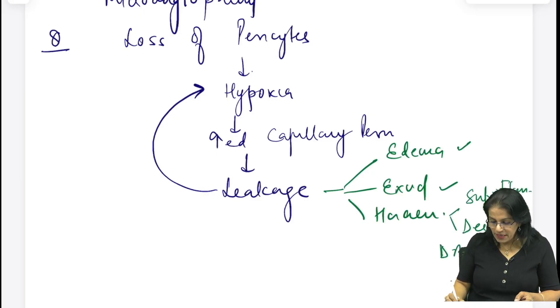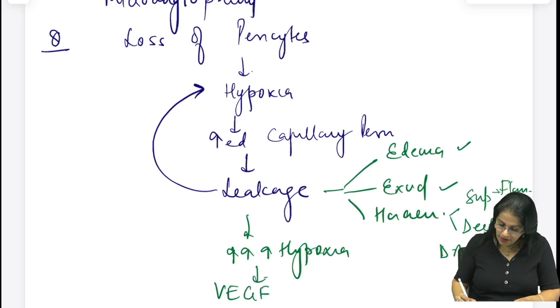Ye aapko basic pata hona chahiye quick review ki. Iske baad kya hota hai? Jab aapko ye pata hai ki ye cheeze ho raha hai, ab leakage ho raha, hypoxia badh raha hai. Jab bahut zyada hypoxia ho jayega, to release of chemotactic factors, mainly VEGF - vascular endothelial growth factor release ho raha hai. Jab ye release hoga to kya hoga? There will be neovascularization. Aur ye kaise depict karte hai retina me? NVD ya NVE. NVD matlab at disc, E matlab iske alawa kahin bhi.